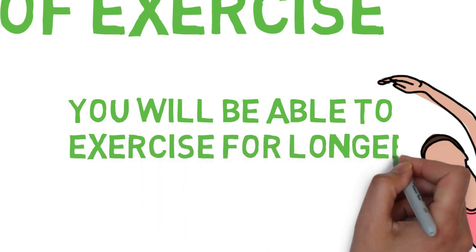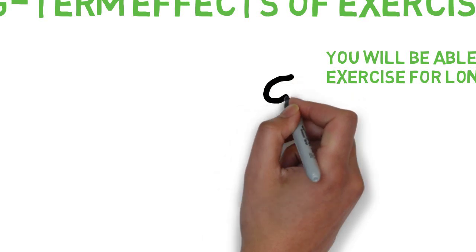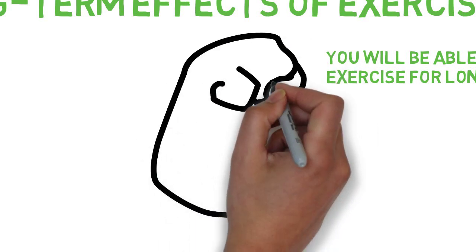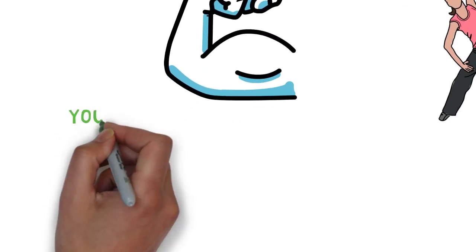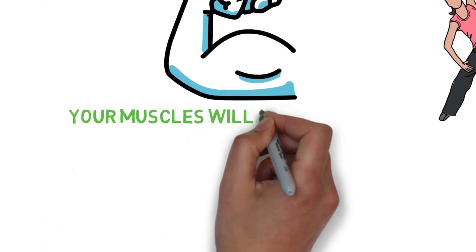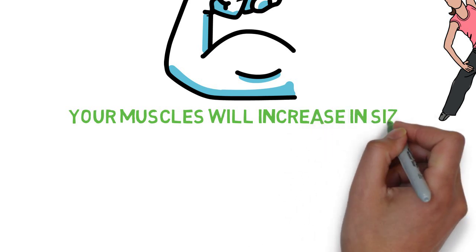Your muscles will increase in size and produce greater strength. When a muscle is trained, small tears are created, and as they heal they become thicker. This process is called hypertrophy.